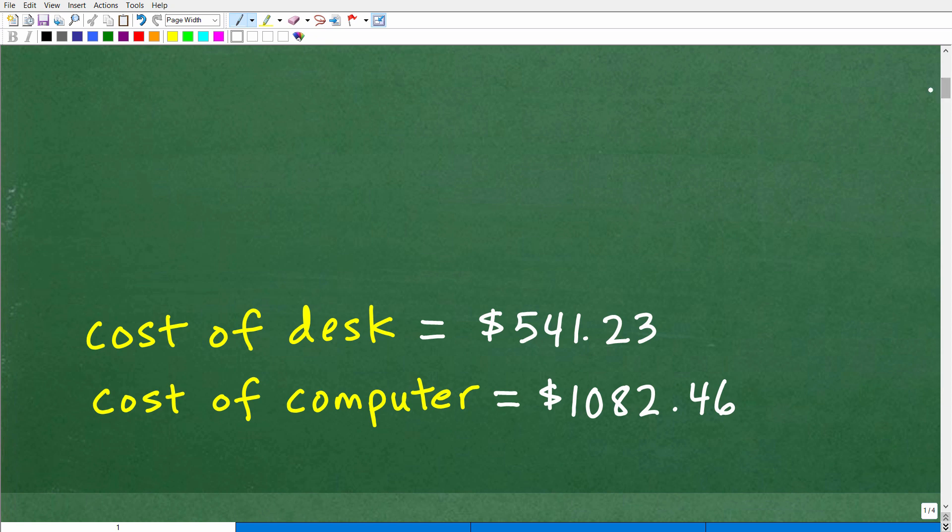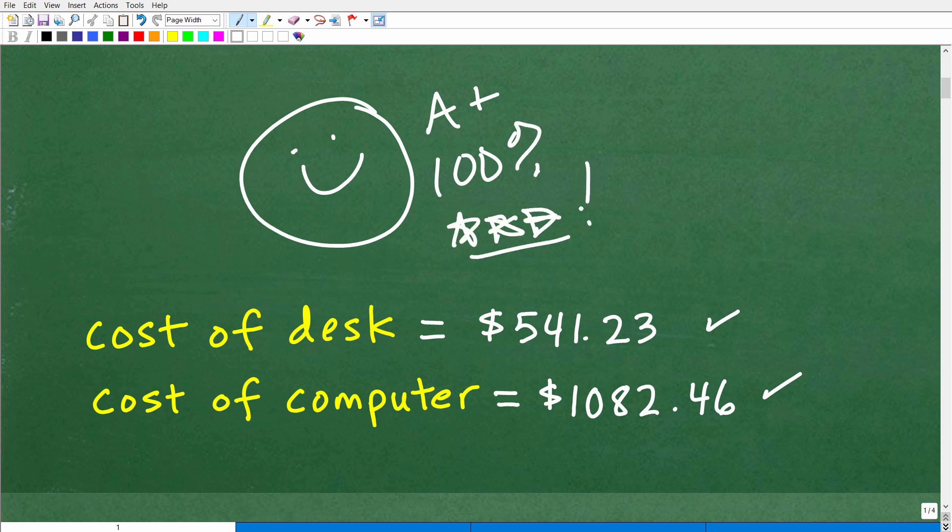Okay, so the cost of the desk is about $541.23. And the computer would be about $1,082.46. Now, you can be plus or minus a penny on here because there's a little bit of rounding going on. But if you're pretty much in the ballpark with these values, then you did this correct, which means you've earned yourself a nice happy face and a plus a 100% and multiple stars to celebrate your awesomeness in math word problems. So, nice job.